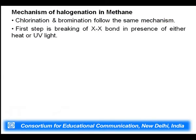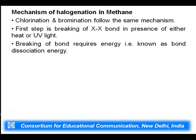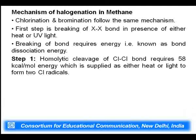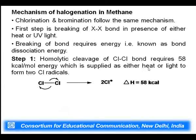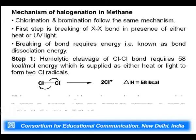The mechanism of halogenation for chlorination and bromination is almost similar, but the overall reaction rate differs. The first step — breaking the X-X bond in the presence of heat or light — is endothermic. The homolytic cleavage of the Cl-Cl bond requires about 58 kilocalories per mole of energy, supplied by UV light or heating. Therefore, the first step of the reaction is endothermic.